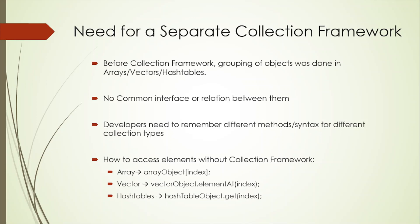For example, if we want to access elements of three different collections before the Collection Framework: for Array, we need to use ArrayObject with square brackets and the index. For vectors, we need to use VectorObject.elementAt and then provide the index. And in case of HashTable, it is totally different — we can use the .get method by passing the index value. As you can see, Array, Vectors, and HashTable all have different implementations even for a very simple operation like accessing an element.